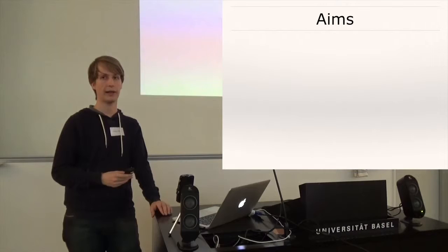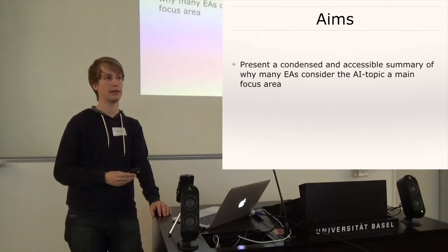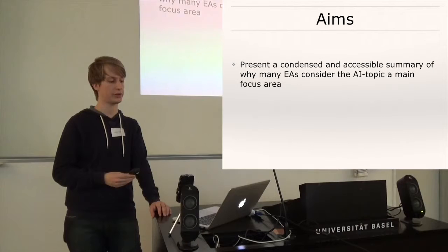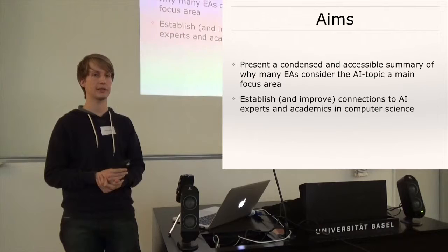We had three main aims for this paper. One was to give an accessible summary of our position on this topic and why we think it is a priority from the standpoint of Effective Altruism. Then another aim was to establish connections to people working on AI or to computer scientists in general. So we are using this opportunity to send out emails to people, ask them for feedback or inputs and their support. And hopefully, some of this will prove fruitful down the line.